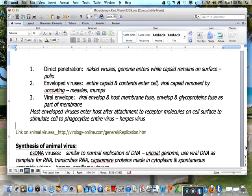With enveloped viruses, the entire capsid and contents enter the cell, and the viral capsid is removed by encoding. These include measles and mumps. The viral envelope and host membrane fuse with the envelope and glycoproteins becoming part of the membrane.